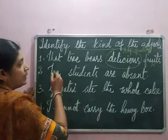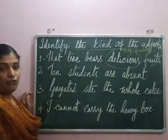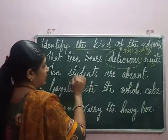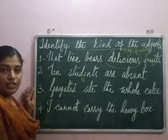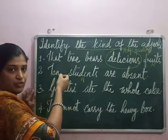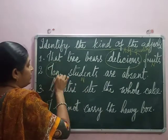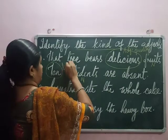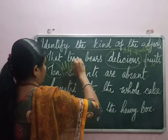Question number 2: 10 students are absent. Which word is the noun? Students. Students is the noun, so which one will be the adjective? How many students are there? 10. It gives the answer for the question 'how many?' The word 10 is the adjective of number.